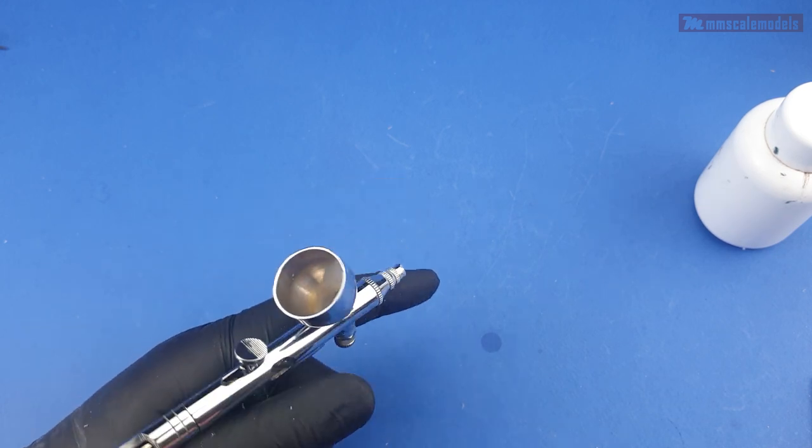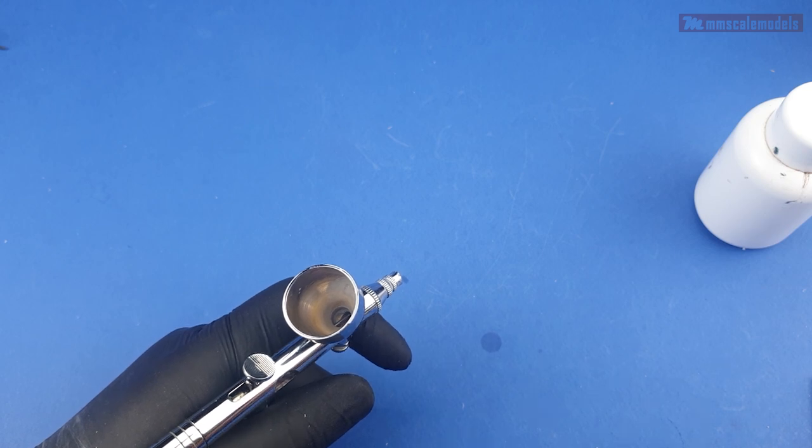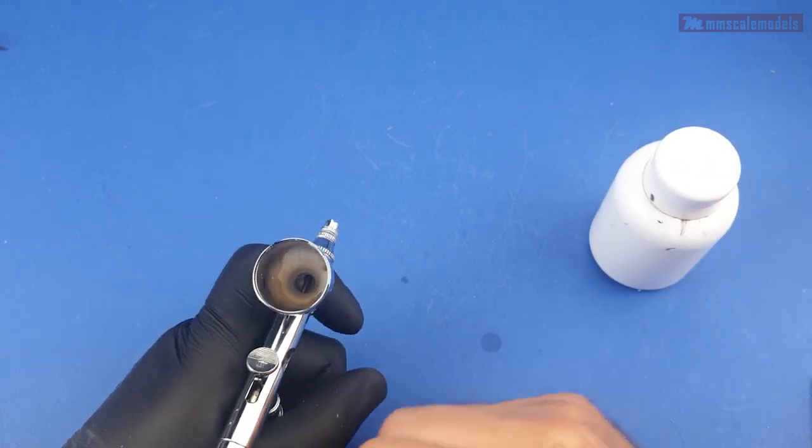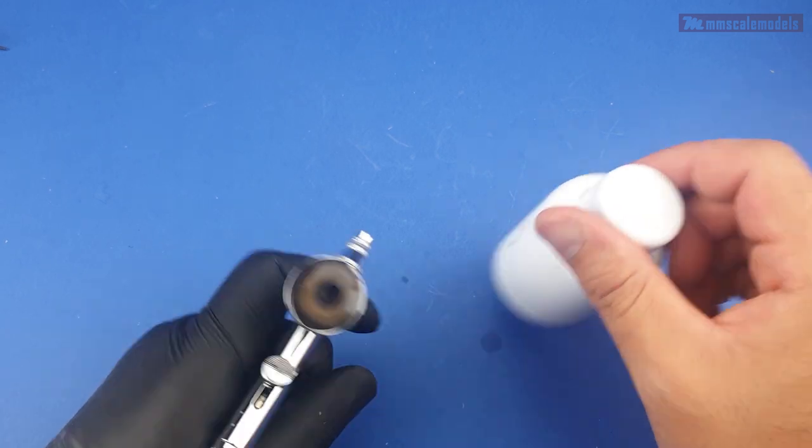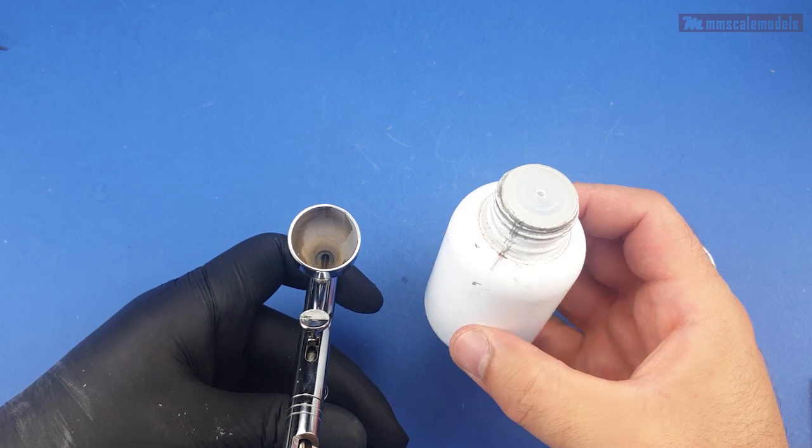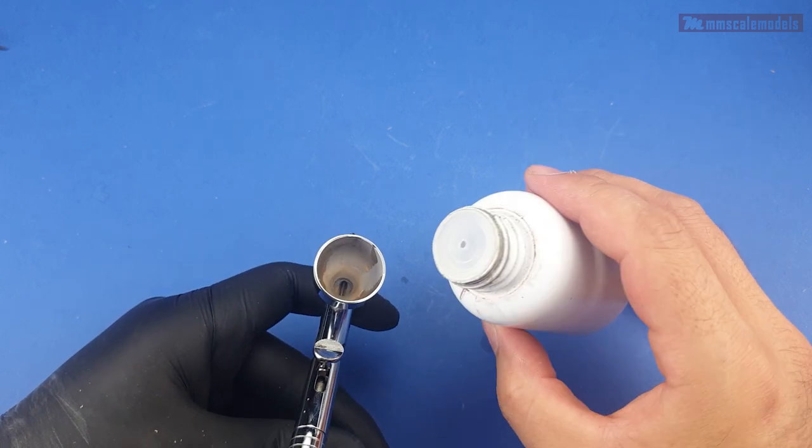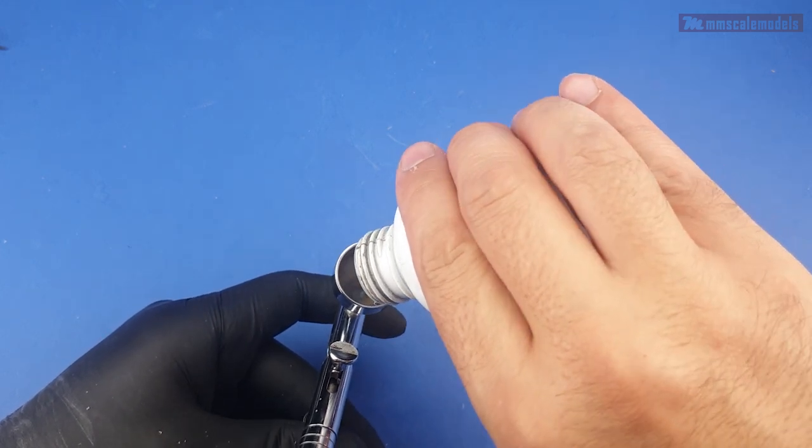When you finish airbrushing for a while, here is what I do. As you can see, I have some Mr. Surfacer in my airbrush, just finished spraying, and here in this bottle I have some acetone.